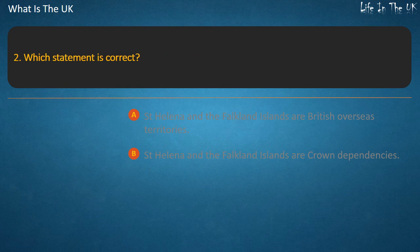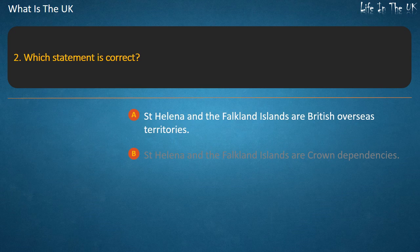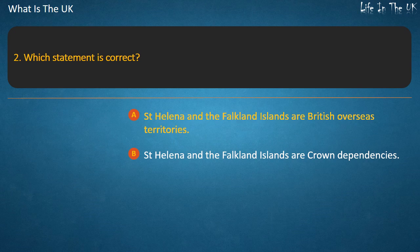Question 2. Which statement is correct? Option A: St Helena and the Falkland Islands are British overseas territories. Option B: St Helena and the Falkland Islands are crown dependencies. Answer: St Helena and the Falkland Islands are British overseas territories.